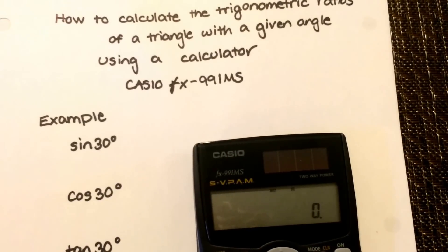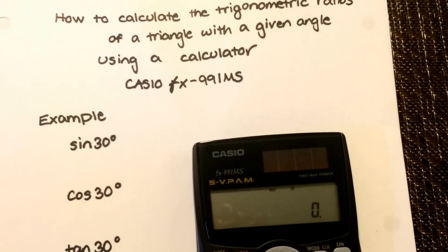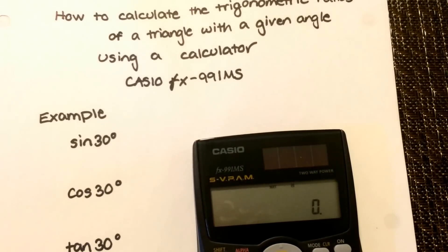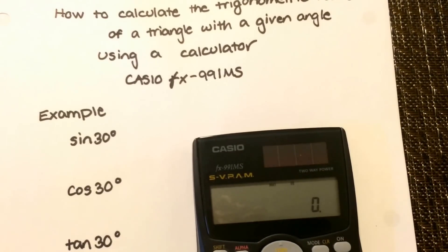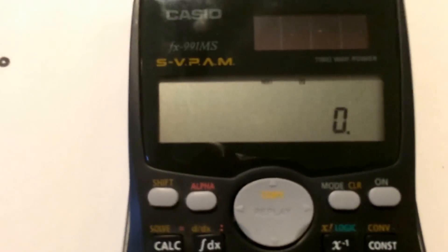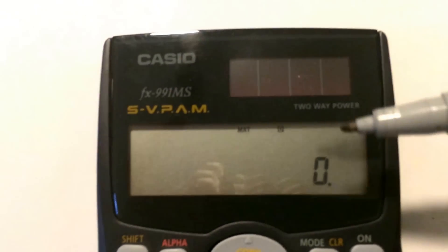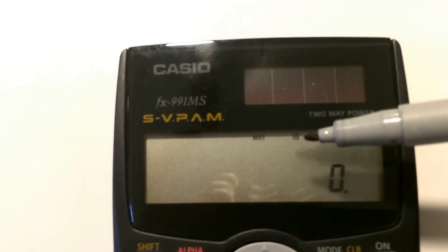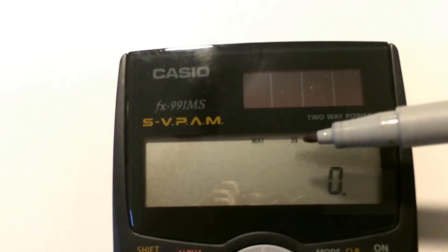In this video I'm going to show you how to calculate trigonometric ratios in degrees using your Casio FX991MS. You notice on your calculator there's something that says D. That's to indicate that you're in degree mode.